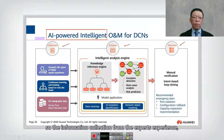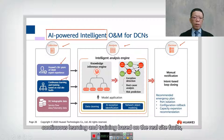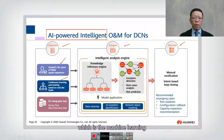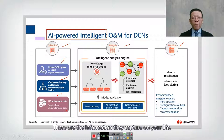Information is collected from expert experience and coded into the iMaster with Huawei experience. Continuous learning and training is based on real-world data through machine learning, as well as data center holistic data, service flow data, and telemetry data. These are the information they capture on your live network.